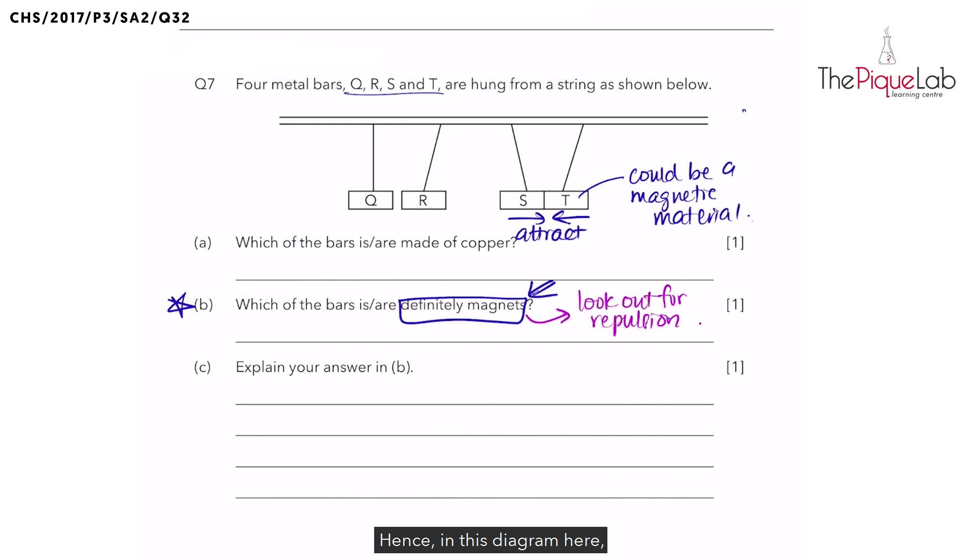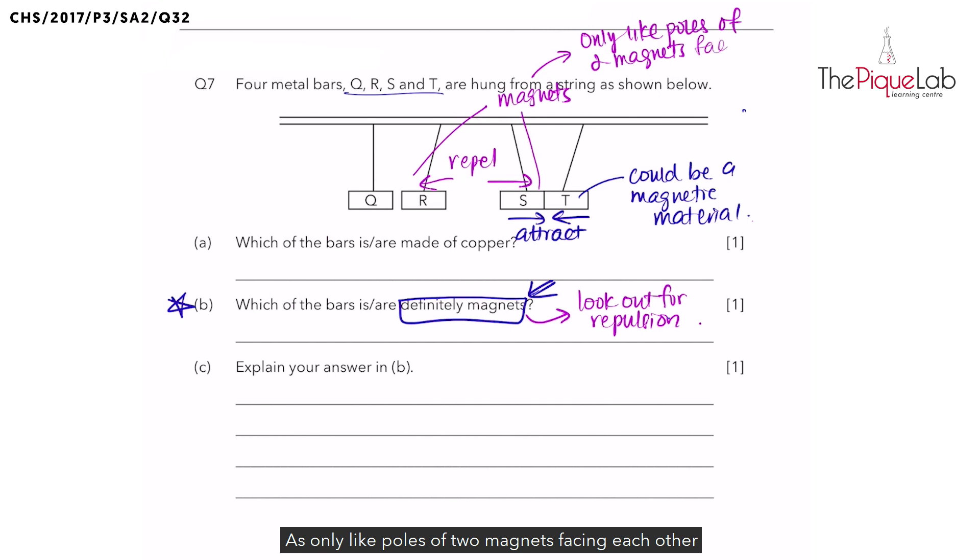Hence, in this diagram here, which two bars are moving away from each other? R and S. Since R and S moved away, they have repelled. And hence, we can confirm that they are definitely magnets. Why? As only like poles of two magnets facing each other can repel.